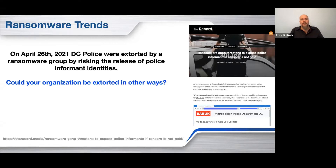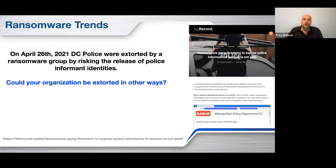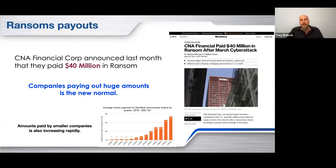We've also seen some interesting extortion. The DC police got extorted by a ransomware group that got the identities of all their undercover agents and said: if you don't pay our ransom, we're going to out all your undercover guys and make that public. With organized crime, that could easily mean deaths to these people. Understand that they have no scruples about who they ransomware or how much damage is done in the process.